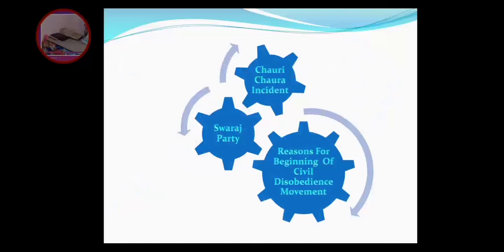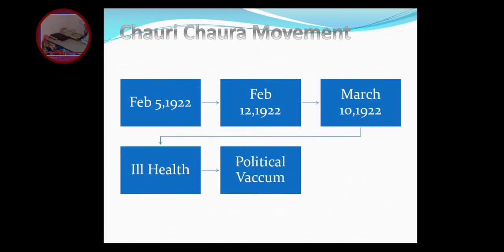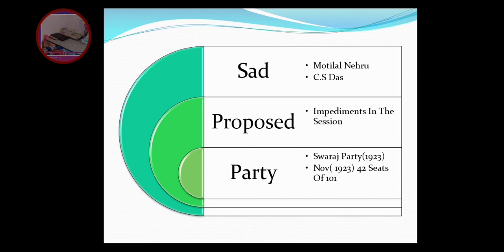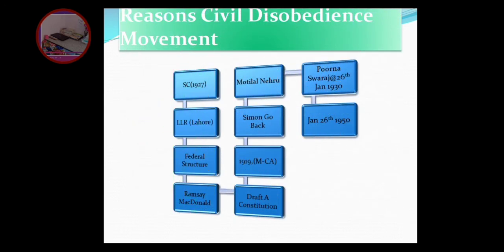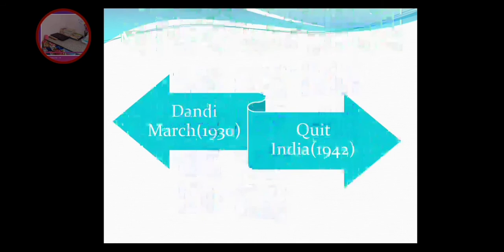Now we learn about the Chauri Chaura incident, Swaraj movement, and reasons for the beginning of the Civil Disobedience Movement - these are also important. Try to Google these topics to get extra knowledge beyond just your textbook. Chauri Chaura started on February 5th. The Swaraj Party was also formed. I told you I am explaining in a brief way - you have to read it by yourself, make points, and read in a smart way, not just hard work.